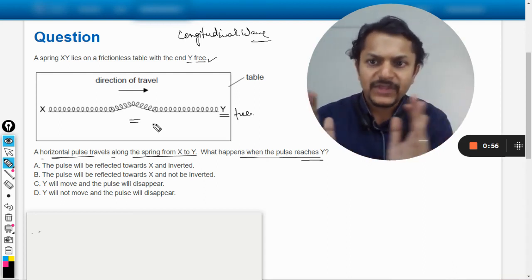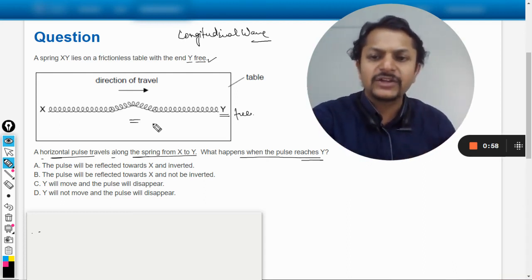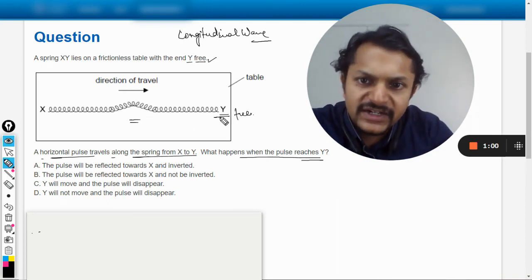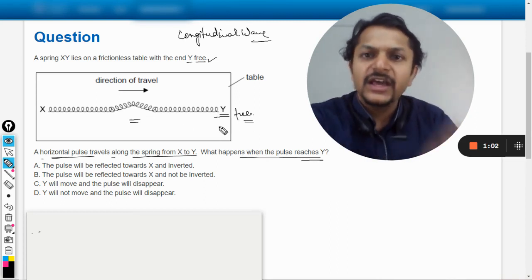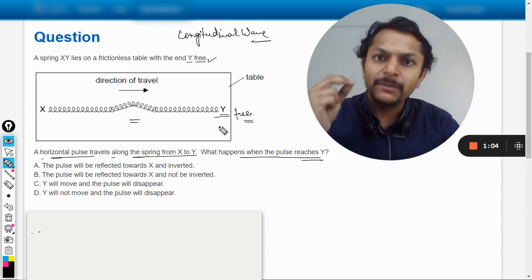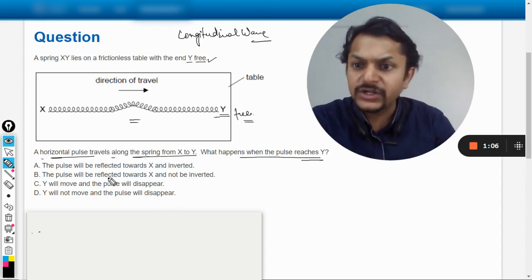That compression is traveling from X to Y. So what happens is when it hits Y, because this is free, it will get reflected back but it will not be inverted.